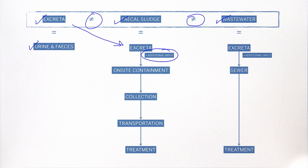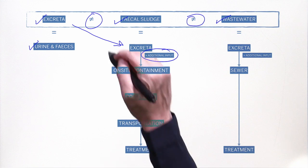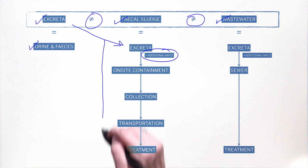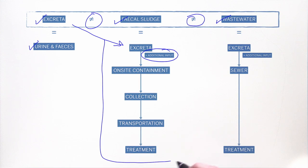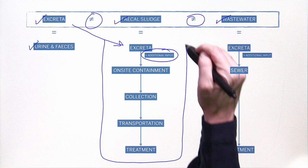Anything else really means anything else — from flush water, cleansing materials, menstrual hygiene products, bathing or kitchen water, garbage, or municipal solid waste. So this, then, is the fecal sludge management service chain.